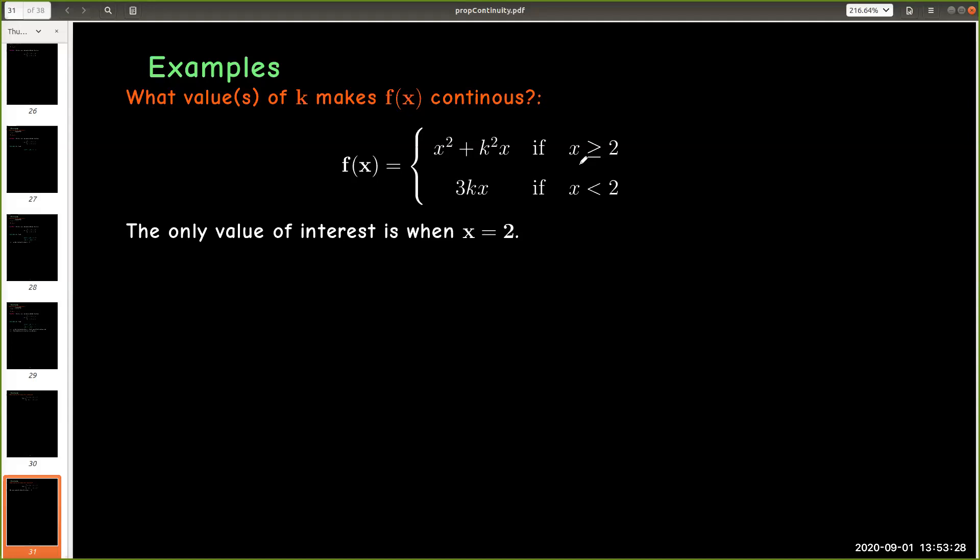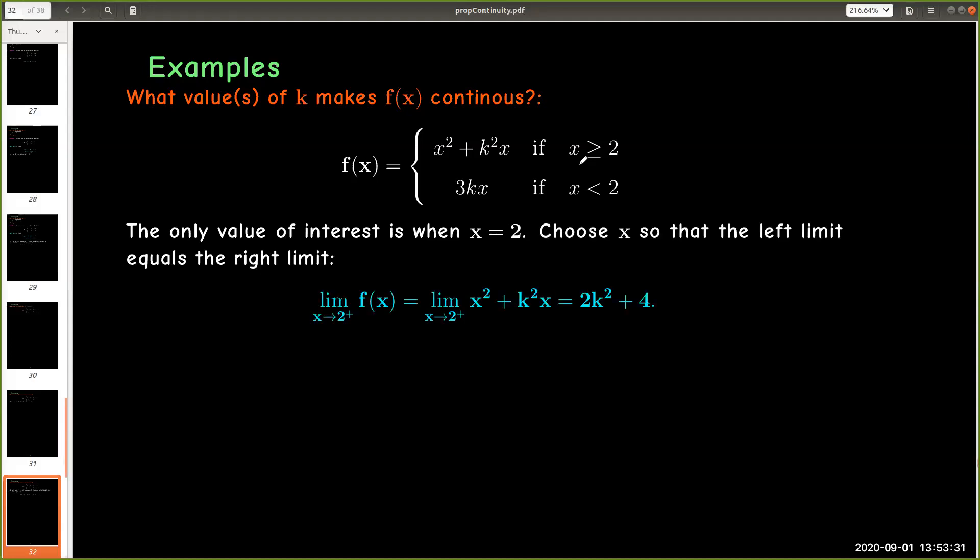Well, for them to meet, we need to have the left limit equaling the right limit. And there is a small mistake here, which we're going to make a quick correction to. We're not going to choose x, x is fixed to be 2. We're going to choose k here. So we're going to choose k so that the left limit equals the right limit.